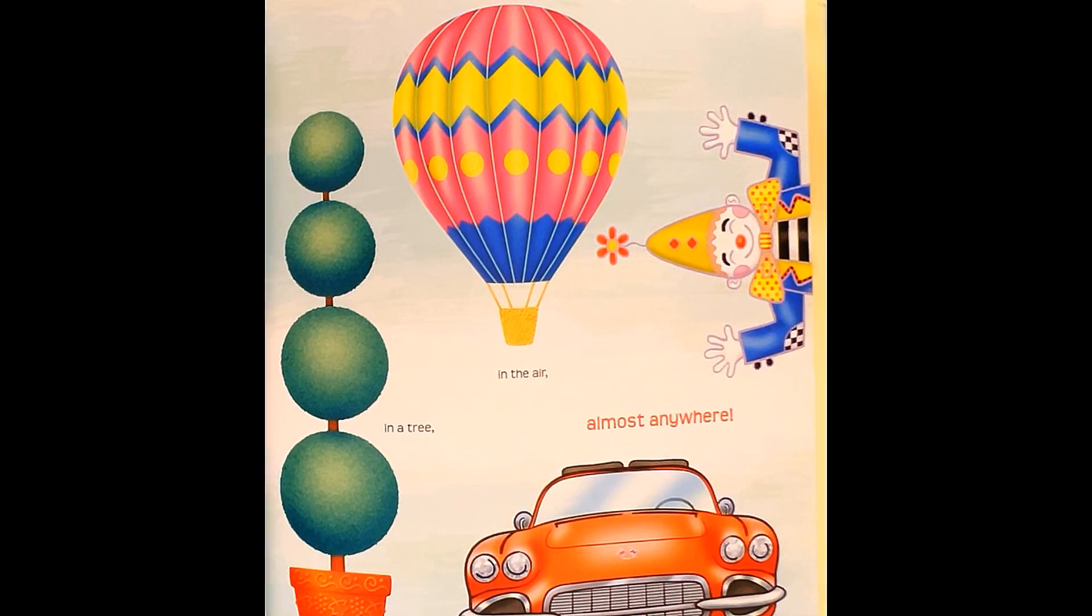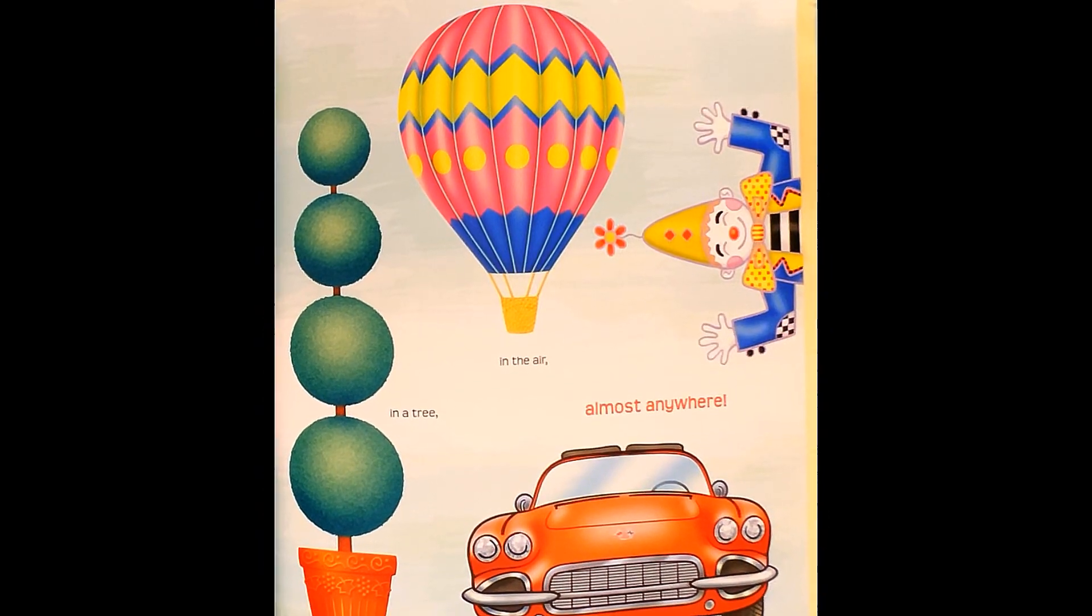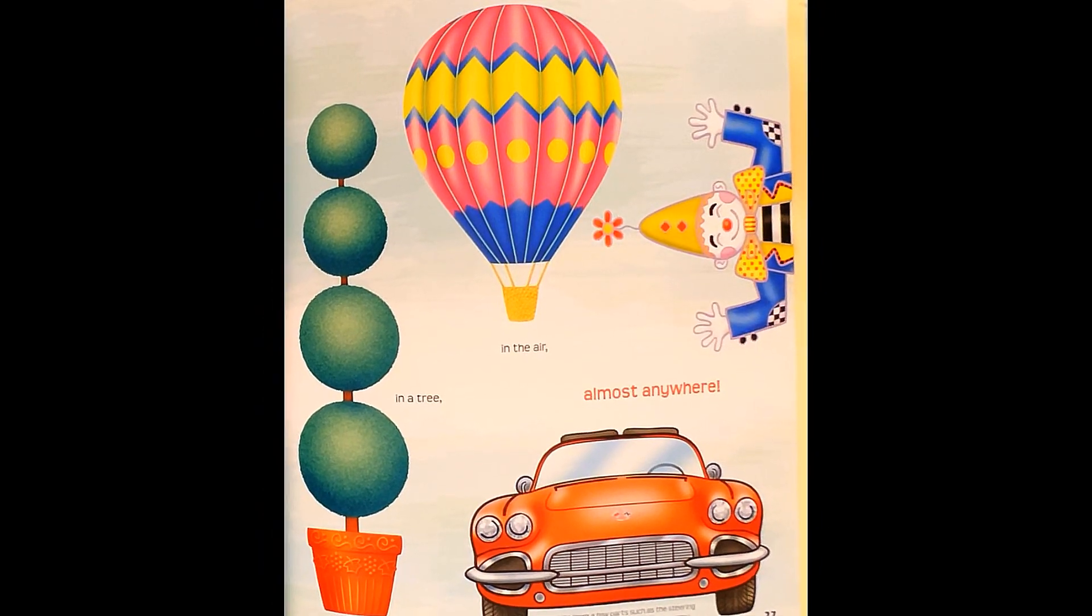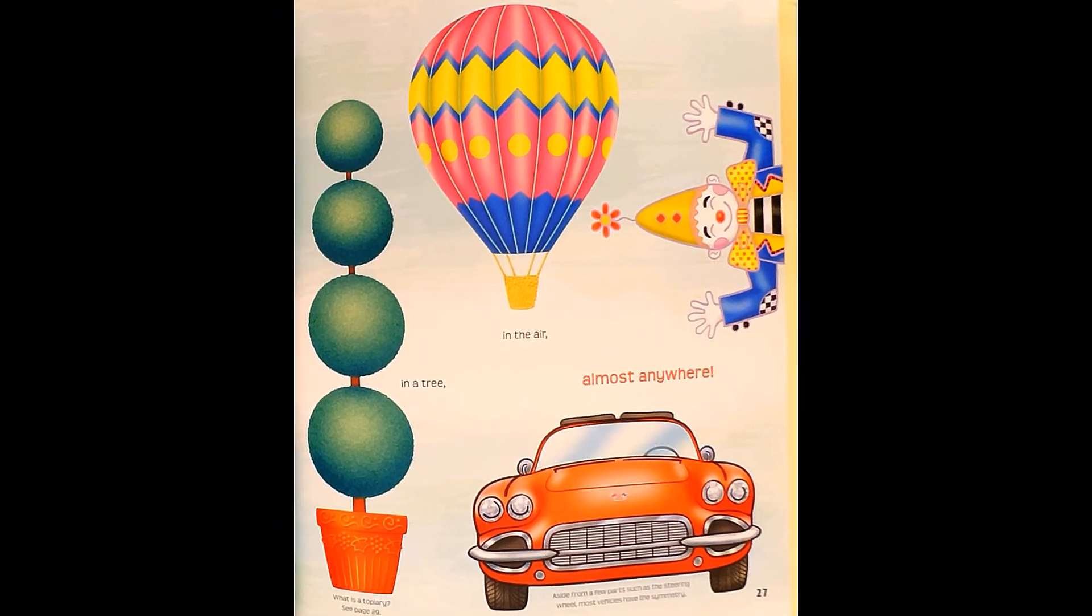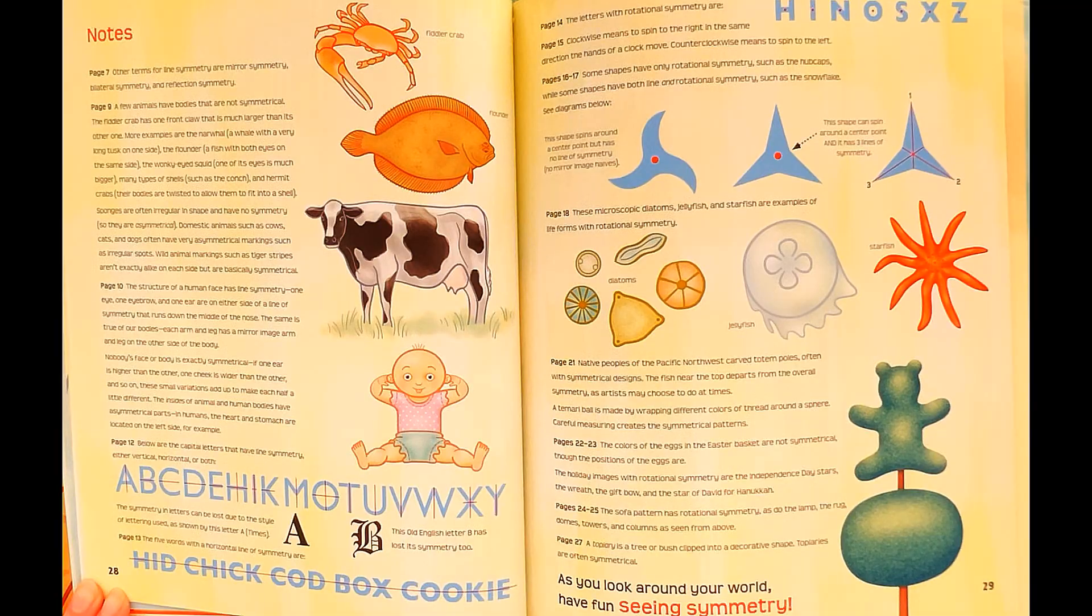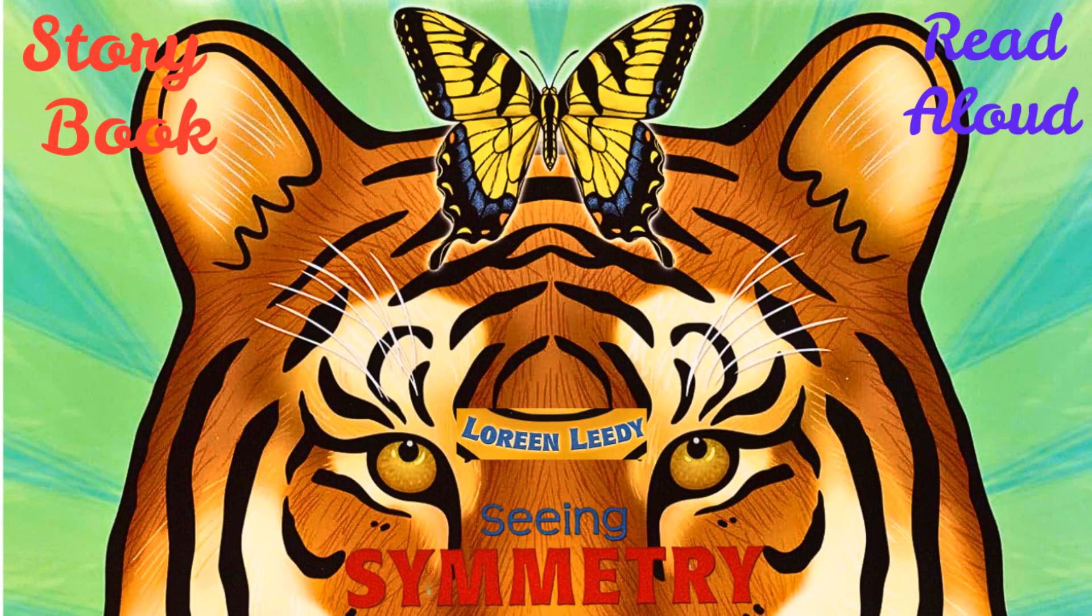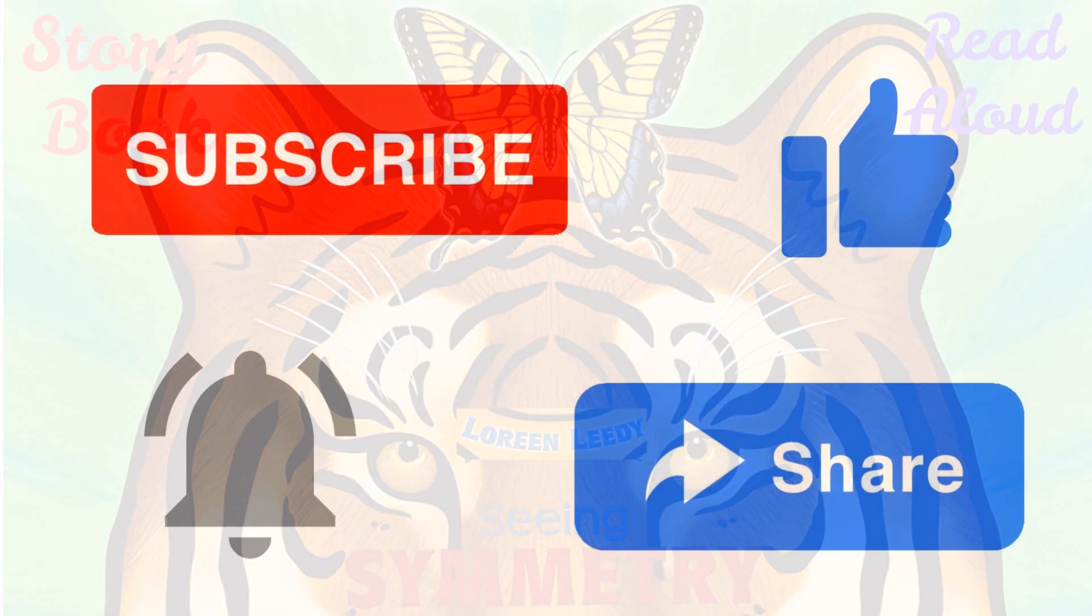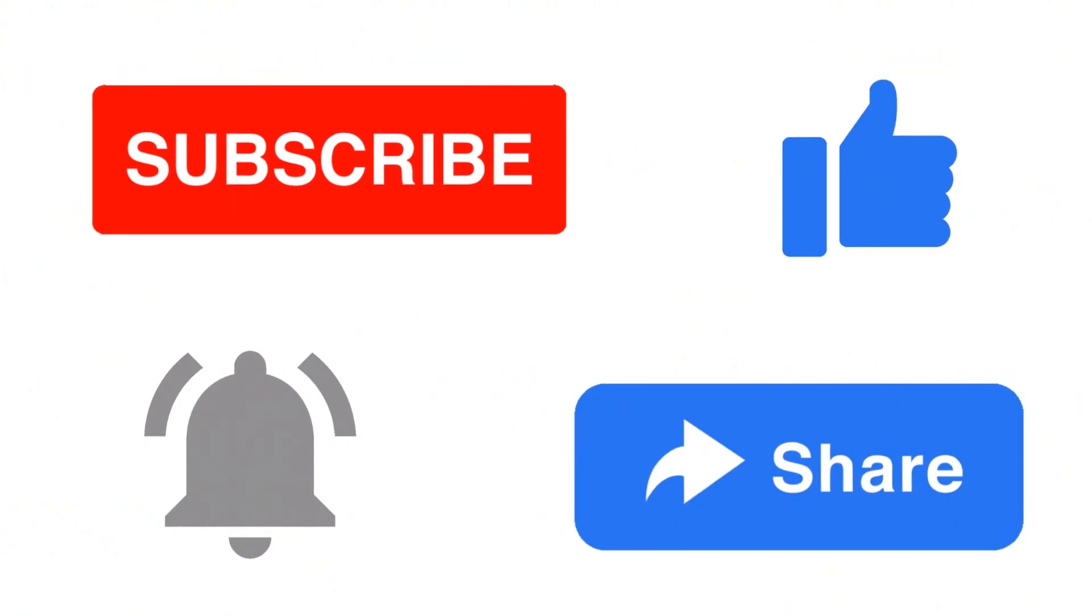Aside from a few parts, such as the steering wheel, most vehicles have line symmetry.